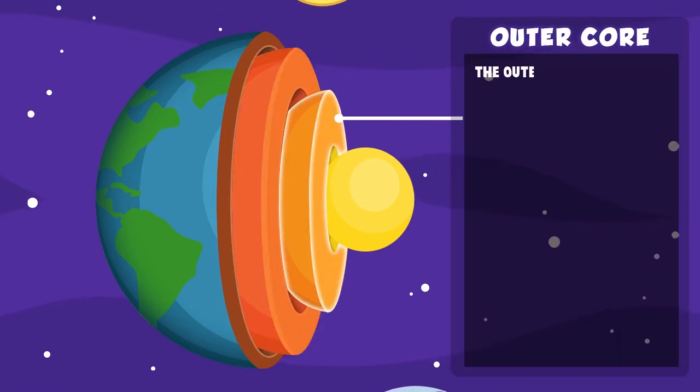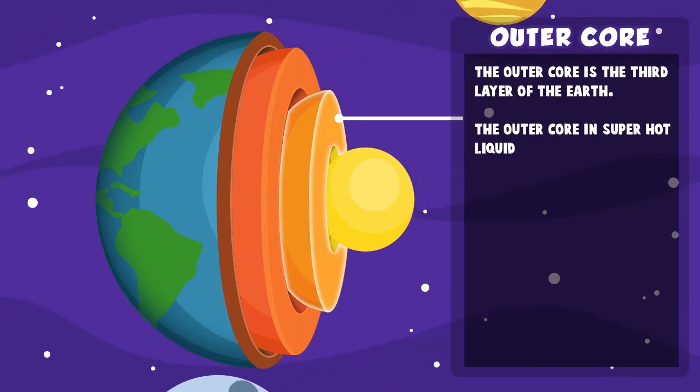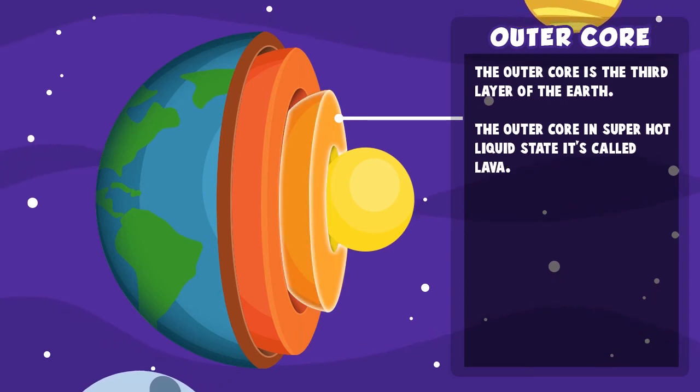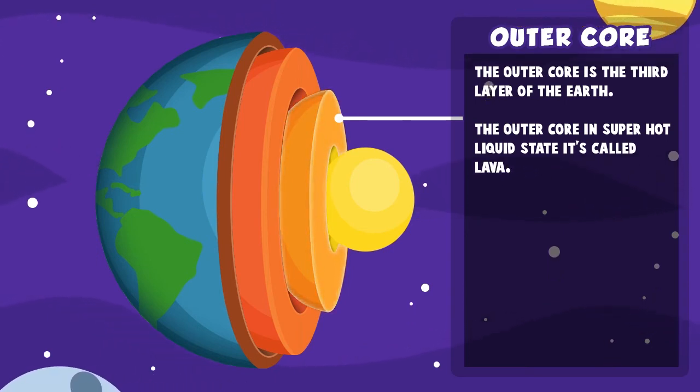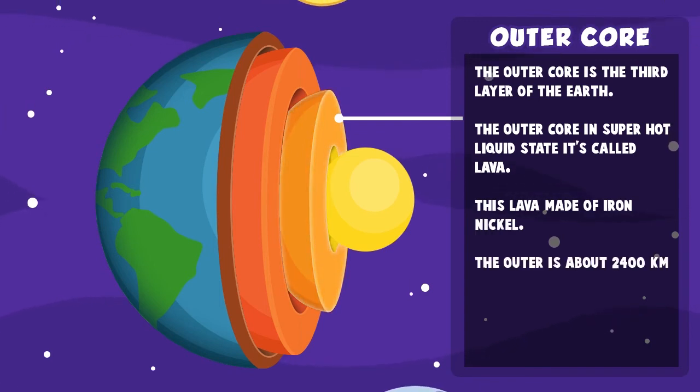Outer core. The outer core is the third layer of the Earth. The outer core is in a super hot liquid state, called lava. This lava is made up of iron and nickel. The outer core is about 2,400 km thick.